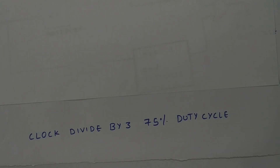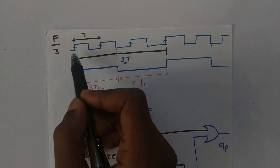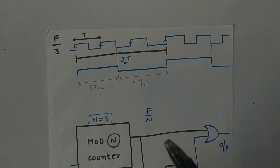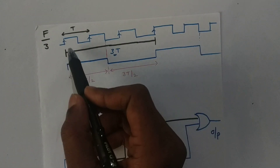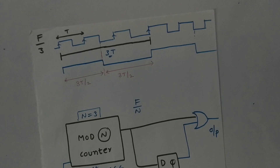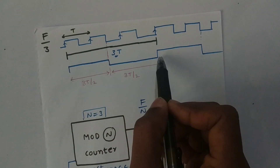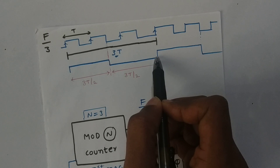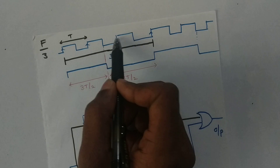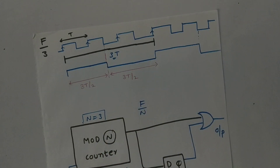I'm going to discuss clock divided by 3 briefly. Our main clock has time period T and frequency F. If we pass it through a clock divided by 3, the output frequency is F/3 and the time period is 3T. One clock period of the output equals 3 clock periods of the main clock. This is the input and output of a clock divided by 3 with 50% duty cycle.